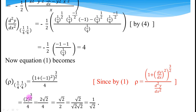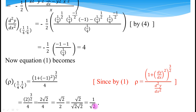Writing 3/2 as 1 + 1/2, we get 2^(3/2) = 2^1 · 2^(1/2) = 2·√2. So ρ = 2√2 / 4 = √2 / 2. Writing 2 as √2·√2, one √2 cancels, giving ρ = 1/√2. Therefore the radius of curvature at the point (1/4, 1/4) equals 1/√2.